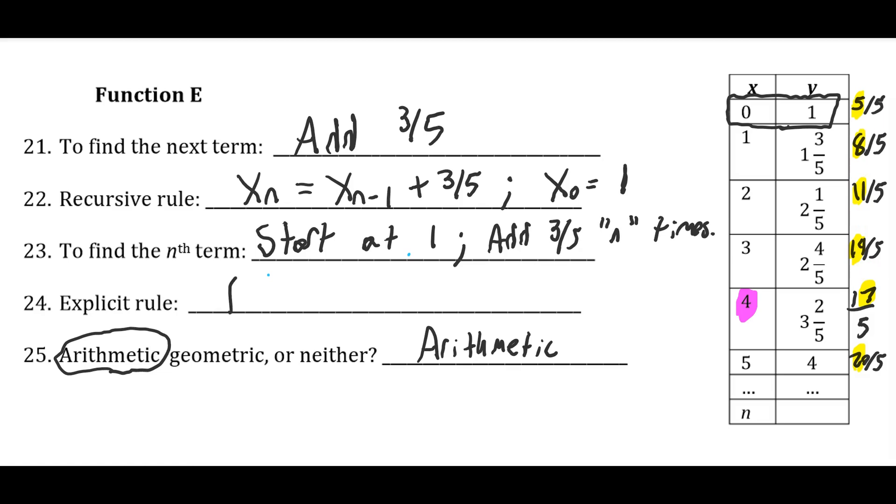So we can write an explicit rule, f of n equals 3 fifths n plus 1, because we're starting at 1, and we're adding 3 fifths n times.